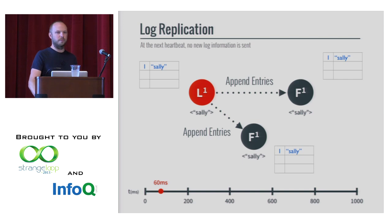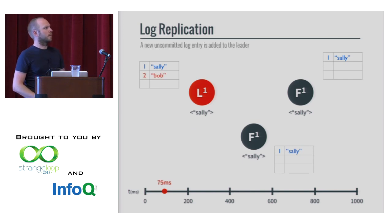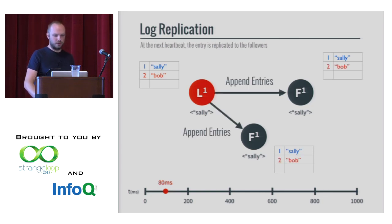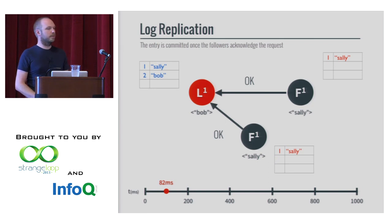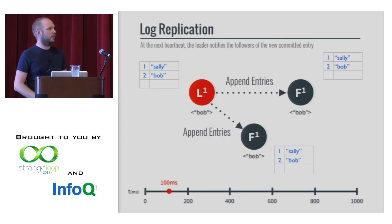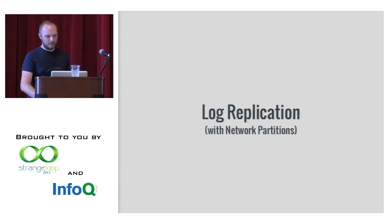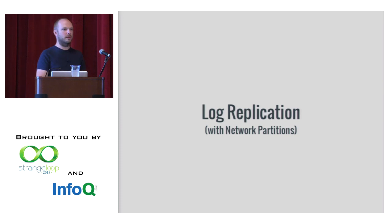Just before the next heartbeat, we get an entry called 'Bob' — we want to change the system from Sally to Bob. It sends out AppendEntries, everyone gets Bob, they come back and confirm. It's committed, and on the next heartbeat it commits everywhere — everybody's Bob. That's the best-case scenario: all nodes up, network up. It's kind of a two-phase commit protocol.